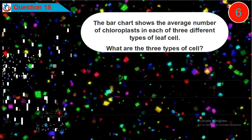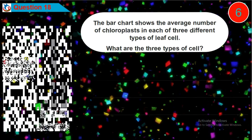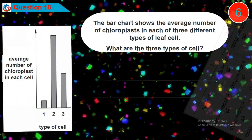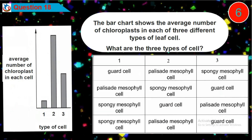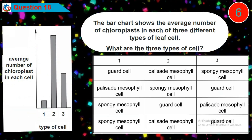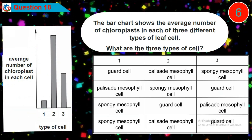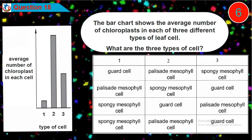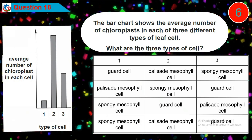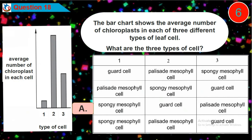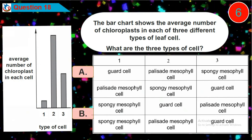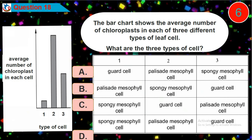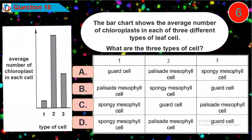Question eighteen: the bar chart shows the average number of chloroplasts in each of three different types of leaf cell. What are the three types of cell? Is it option A, B, C, or D?